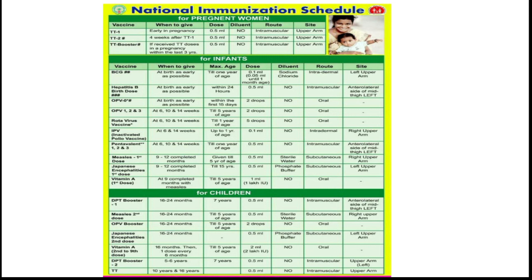Next, the immunization schedule of India, which is called the National Immunization Schedule. In this schedule there are categories by age group — vaccines are provided to pregnant women, infants, and children according to their age.